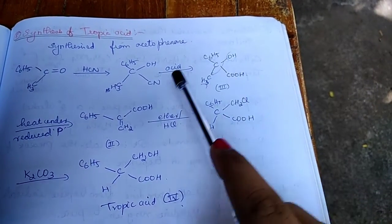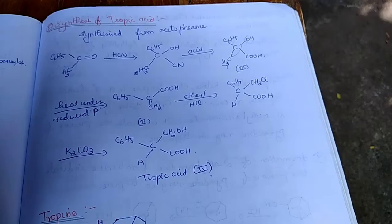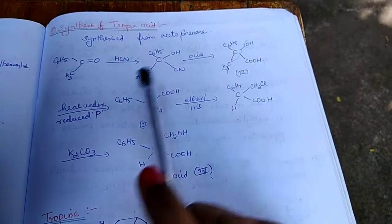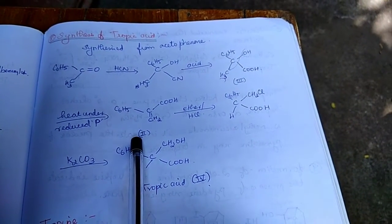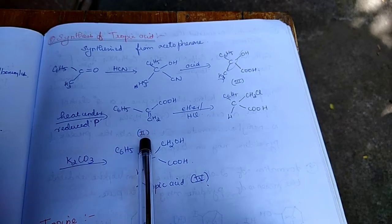When we heat this compound under reduced pressure, we get this structure which is atropic acid.